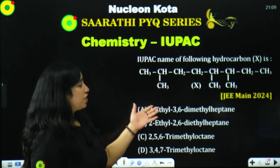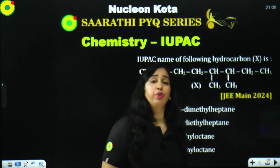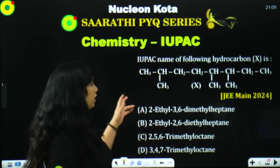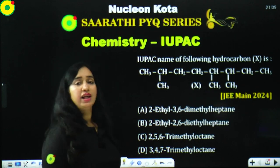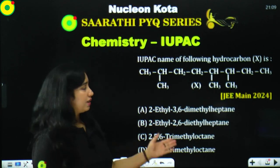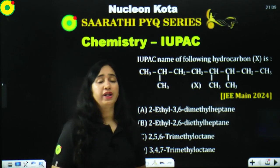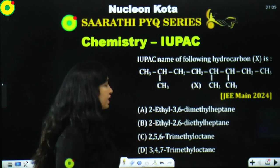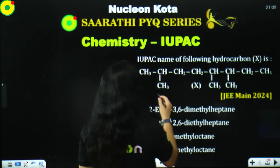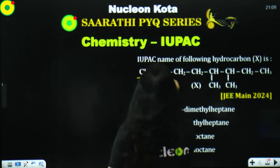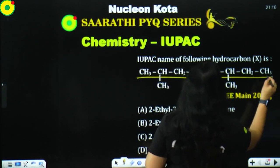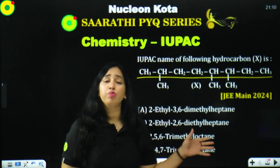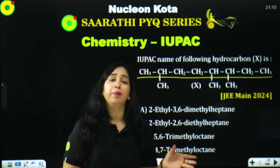So, this question is from Mayn 2024. Look how easy it is. This compound's IUPAC name has been asked — this is a hydrocarbon. What rules do we follow? The main chain is the longest chain. This is a straight chain. Now, the numbering rule — this question is based on the numbering rule.